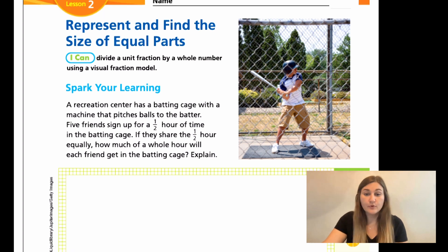We start out with a word problem that reads, A recreation center has a batting cage with a machine that pitches balls to the batter. Five friends sign up for a half hour of time in the batting cage. If they share that half hour equally, how much of a whole hour will each friend get in the batting cage? Okay, so we have a half an hour, which we know is 30 minutes. And five friends want to be sharing these 30 minutes. But we want to know how much of the full hour is each friend getting. So there's two things going on here.